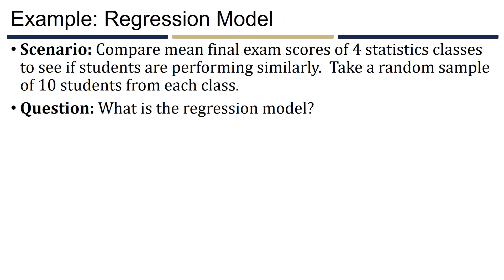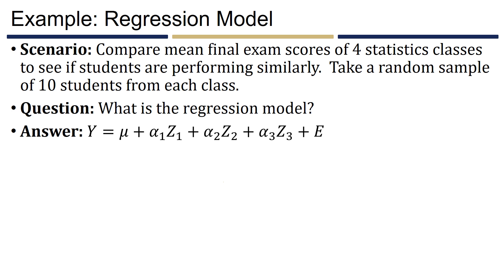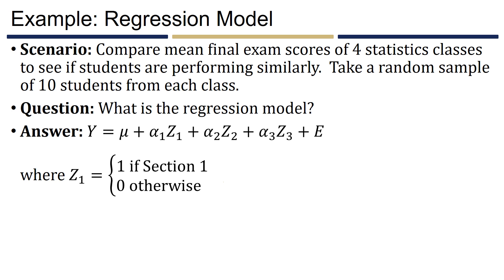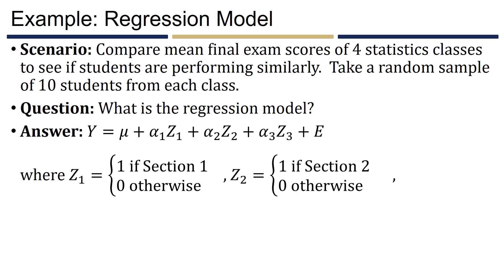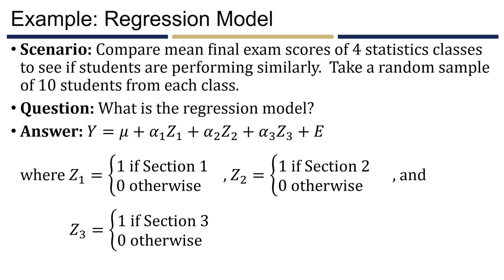Going back to our example with four statistics classes: because we have four groups, we need three dummy variables. Our regression model is y = mu + alpha_1*z_1 + alpha_2*z_2 + alpha_3*z_3 + error, where z_1 = 1 if the student is from section 1 (0 otherwise), z_2 = 1 if from section 2, z_3 = 1 if from section 3. Section 4 acts as the reference group, so no dummy variable is needed for it.